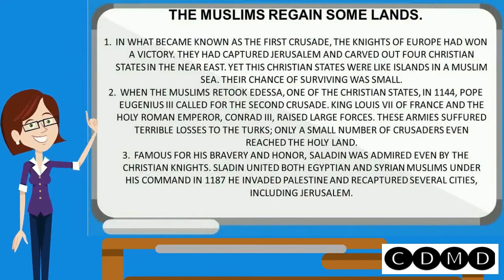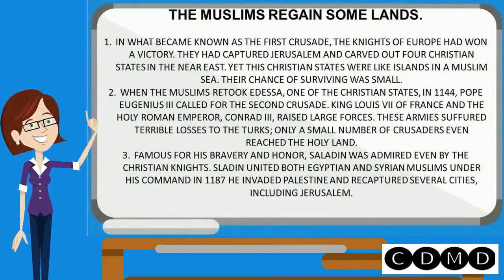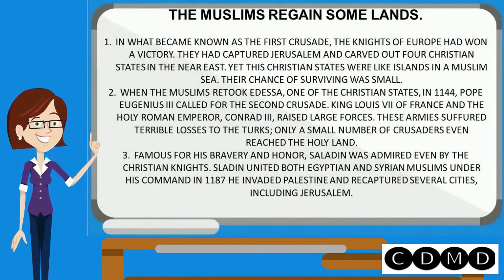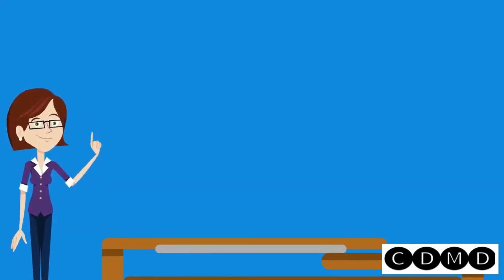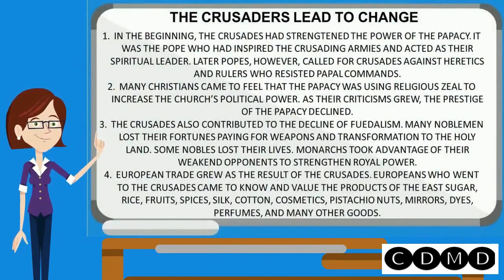The Muslims regained some lands. In what became known as the First Crusade, the knights of Europe had won a victory — they had captured Jerusalem and carved out four Christian states in the Near East. Yet these Christian states were like islands in a Muslim sea, and their chance of surviving was small. The crusades led to change. In the beginning, the crusades had strengthened the power of the papacy, as it was the pope who had inspired the crusading armies. Later, however, popes called for crusades against heretics and rulers who resisted papal commands.